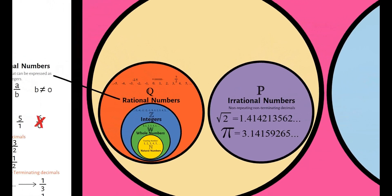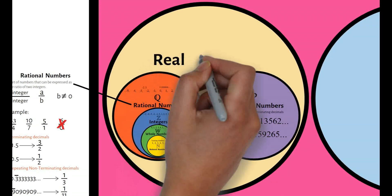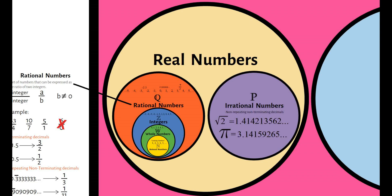Next classification of numbers are real numbers. It is denoted as this symbol. Real numbers are simply the sets of all rational and irrational numbers.